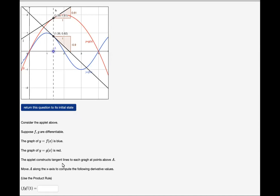The applet constructs tangent lines to each graph at points above a. Notice as you move this point the tangent lines are constructed for each function. It shows the slope of the tangent lines and the output values as well.